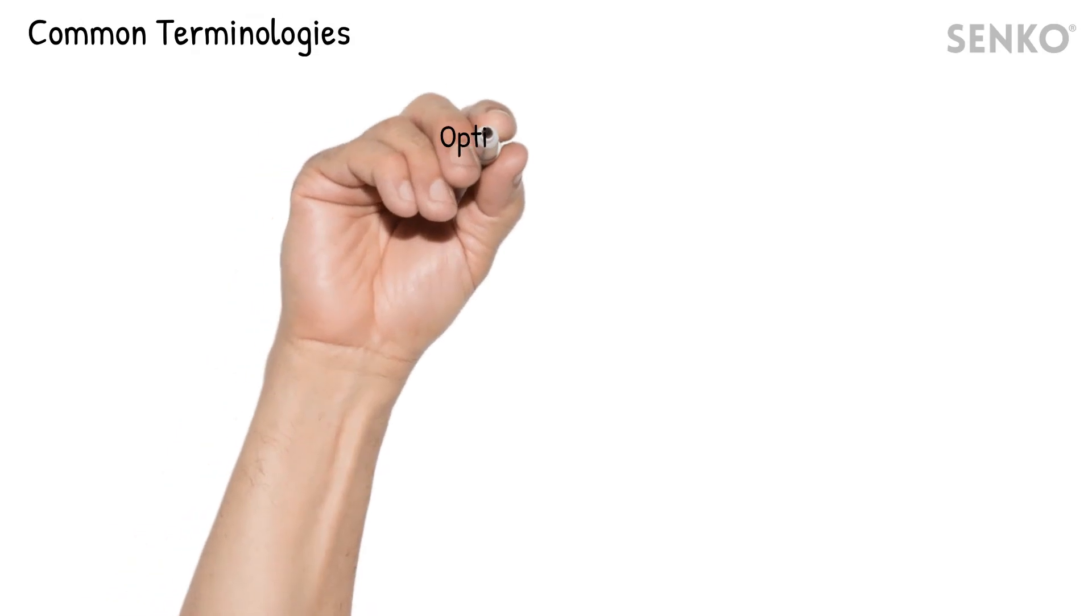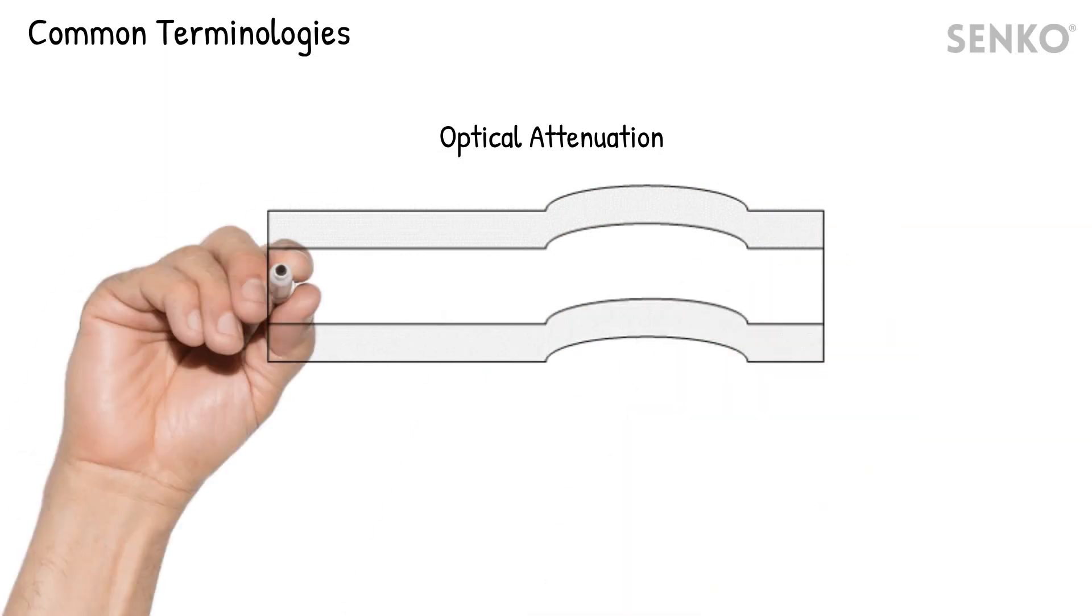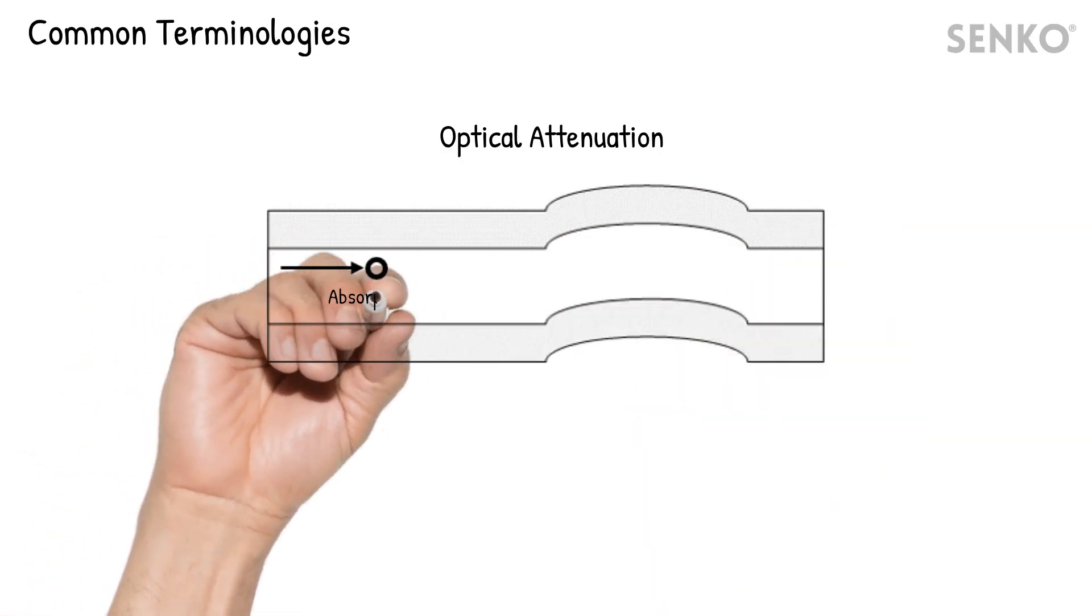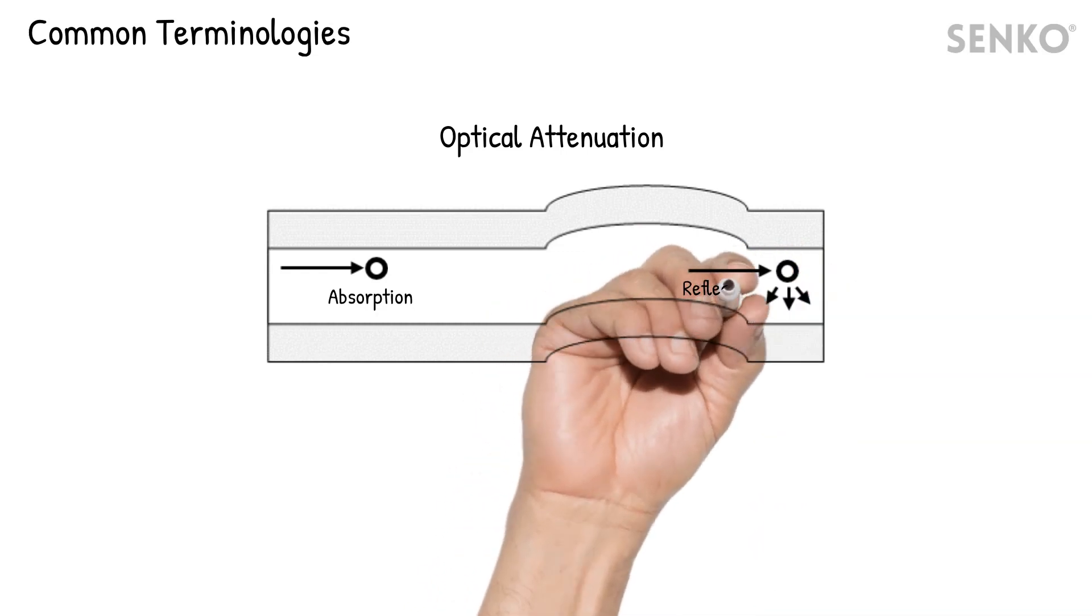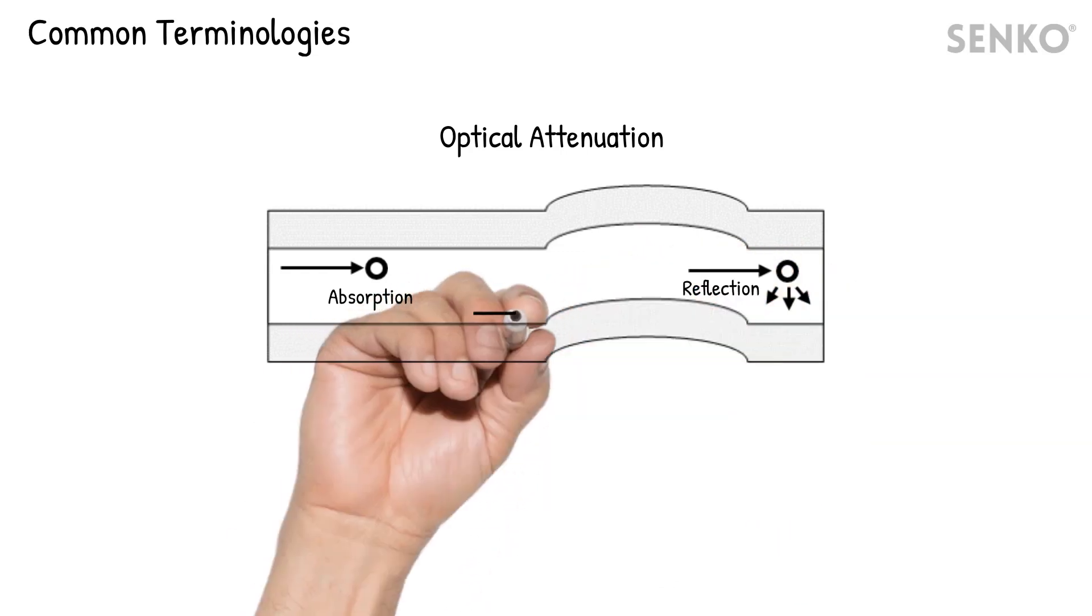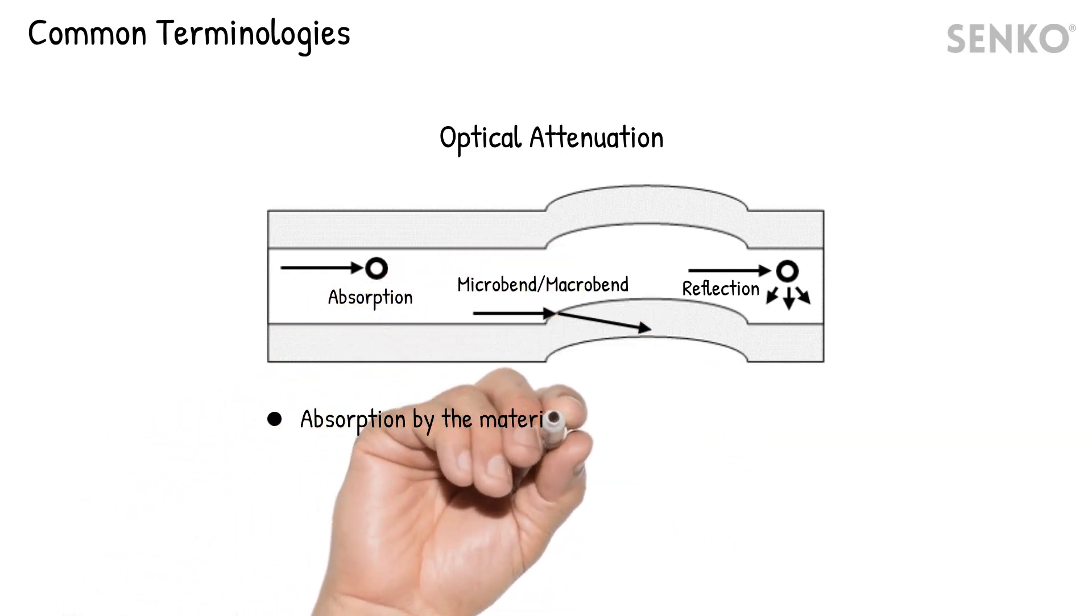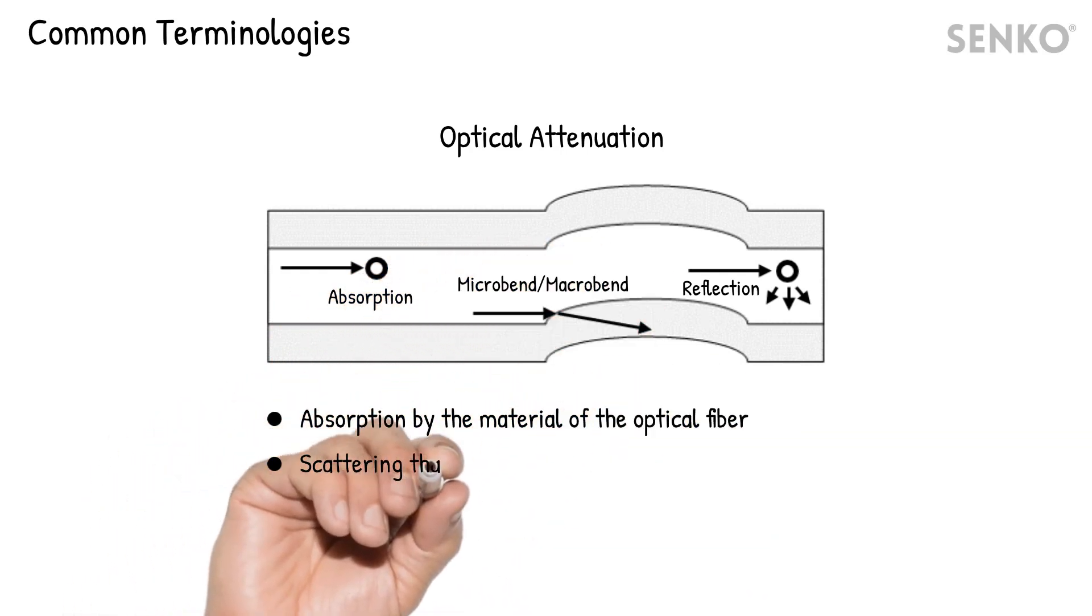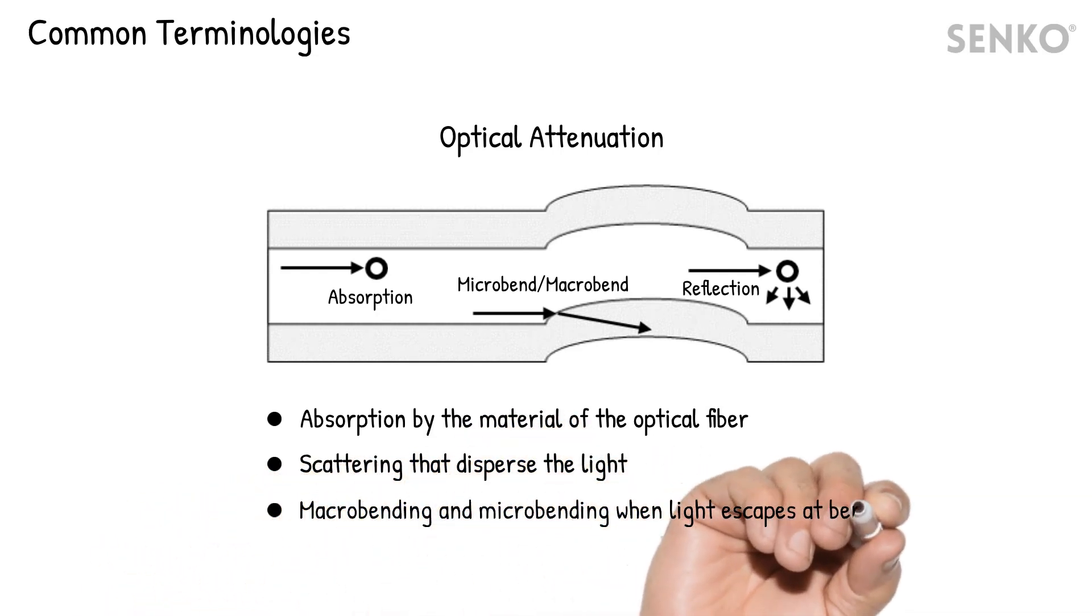Optical attenuation is best described as the loss of optical power. Some factors that contribute to attenuation are absorption by the optical fiber material, imperfections of the fiber causing light to reflect or scatter, and finally, macro bending and micro bending loss, where light escapes the fiber core when it is excessively bent beyond its specified limits.